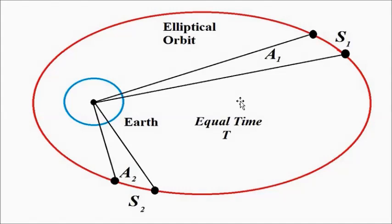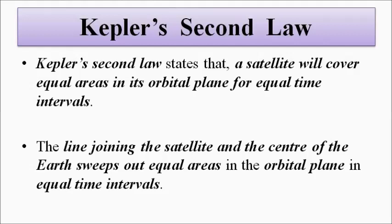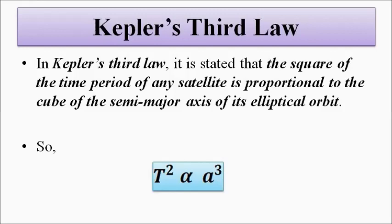Even if we take t equals 100 seconds, the distance covered by the satellite will vary, but the area will always be the same. Area covered by the satellite will always be the same — this is Kepler's second law. Next is Kepler's third law. Kepler's third law says that the square of the time period of any satellite...